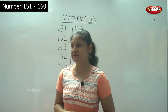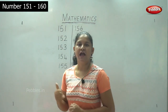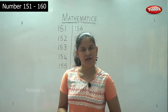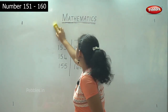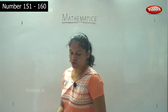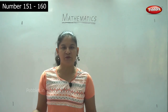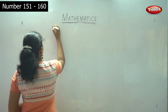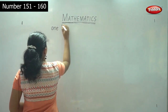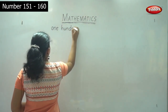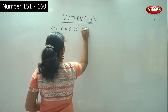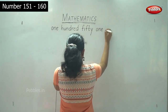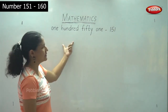So I hope you are thorough with writing the numbers from 151 to 160 and able to identify the numbers by using the small placards. Next we will move on to learning to write the number names of these numbers from 151 to 160. So we already know the spelling for 100 and 50, so it's going to be very simple. 151 is spelled O-N-E H-U-N-D-R-E-D F-I-F-T-Y O-N-E.